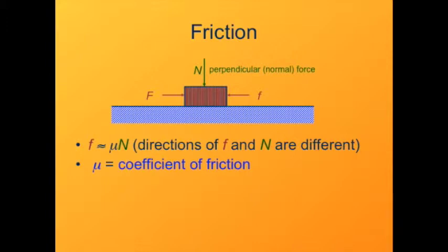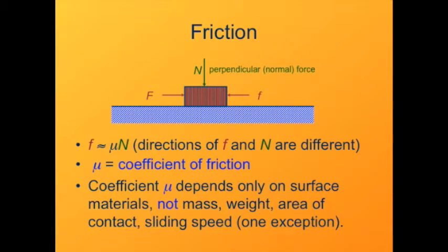Mu basically tells how sticky the surfaces are together. The larger the mu, the larger the force of friction. The value of mu depends only on what the surface materials are and their conditions, such as if they're wet or dry or what their temperature is. It doesn't depend on the mass of an object. It doesn't depend on the weight, the contact area between the objects, or how fast they're sliding past each other.